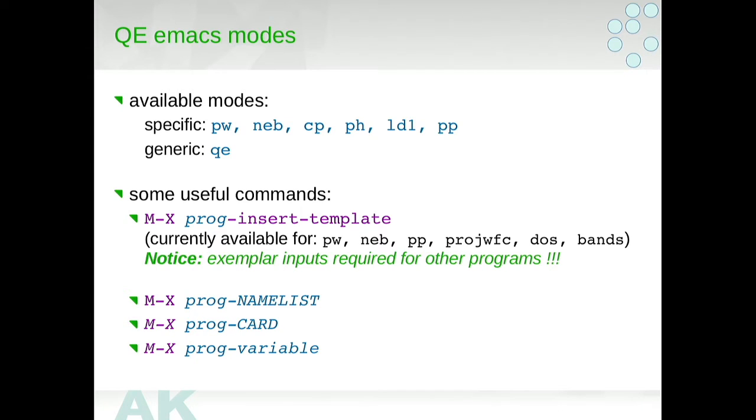There are also some useful commands. For example, you can say something like this, where this proc is the name of a given Quantum Espresso program. And then this command insert template will just create a template kind of empty input file for a given program. And then this is also very nice, this Emacs auto-completion mechanism. For example, you can say PW underscore C and you press tab and you get all the variables from all the card list that starts with C. I will just show this now, how all this looks like.